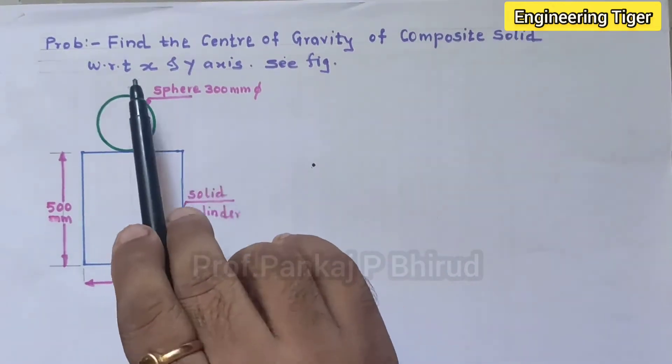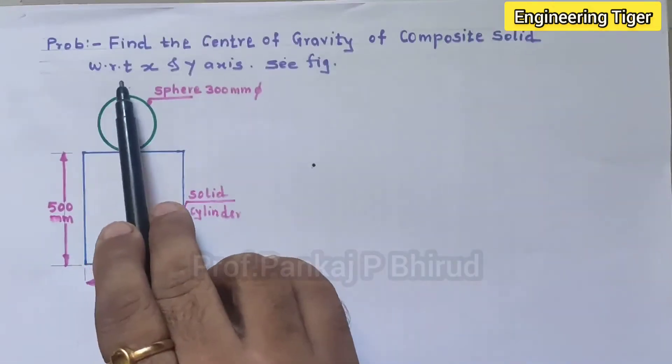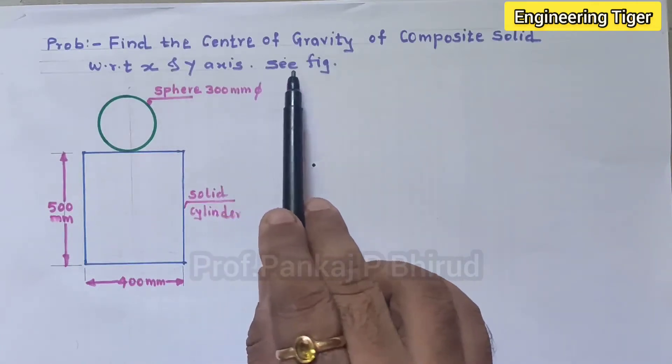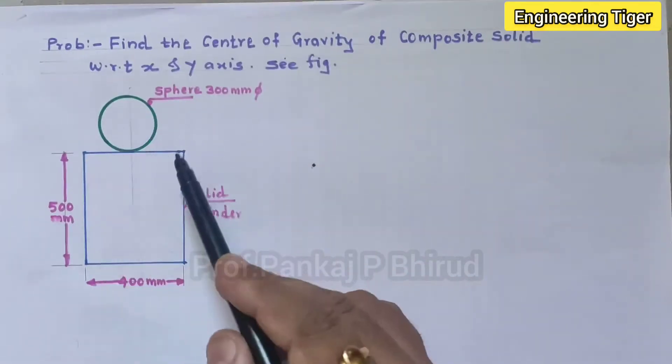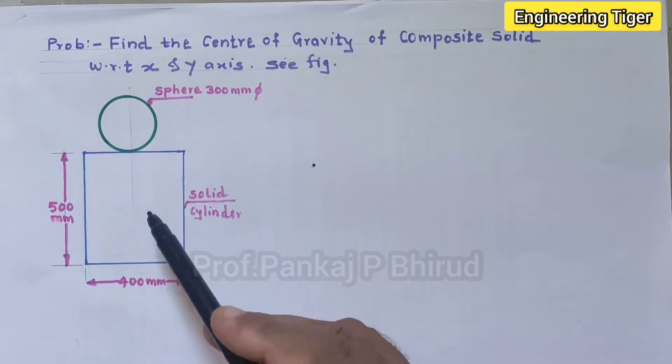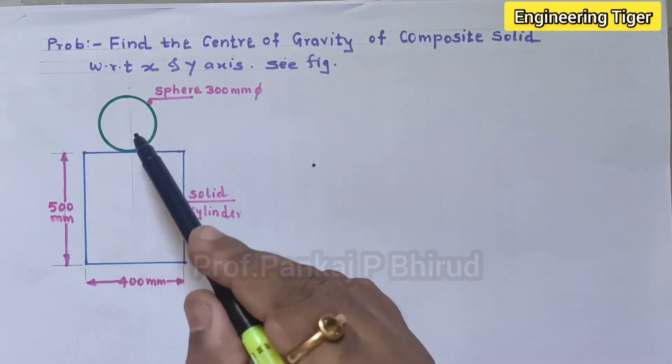So here the problem is: find the center of gravity of a composite solid with respect to x and y axis. See the figure. So here the composite figure is given, it is a composite of a cylinder and sphere.